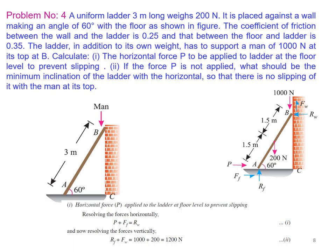Problem 4: A uniform ladder 3 meters long weighing 200 N is placed against a wall making an angle of 60 degrees with the floor. The coefficient of friction between the wall and the ladder is 0.25, and between the floor and the ladder is 0.35. The ladder supports a man of 1000 N at its top B. Part 1: Calculate the horizontal force P required at the floor level to prevent slipping. Part 2: If P is not applied, what is the minimum inclination of the ladder to prevent slipping?